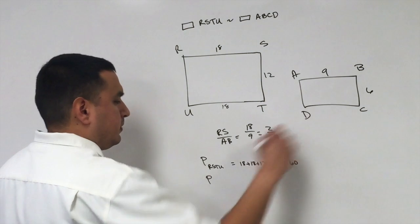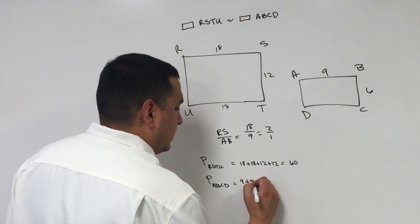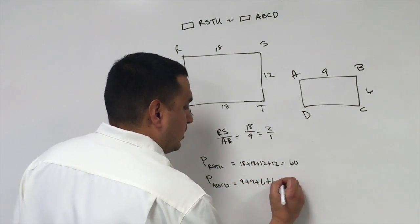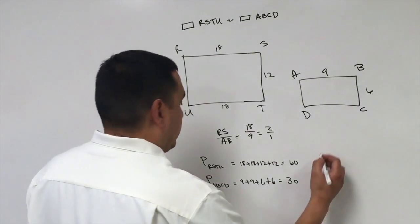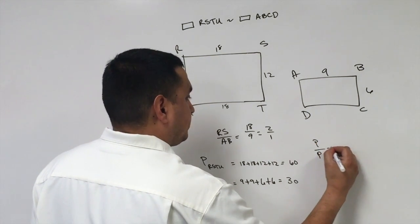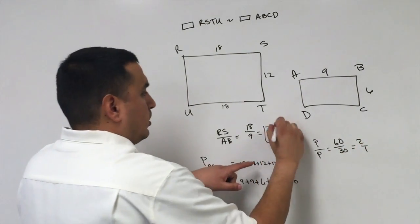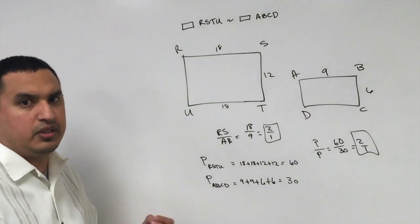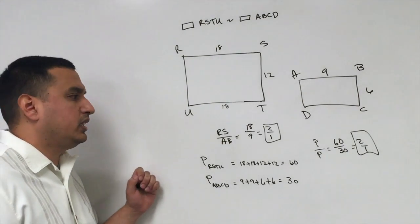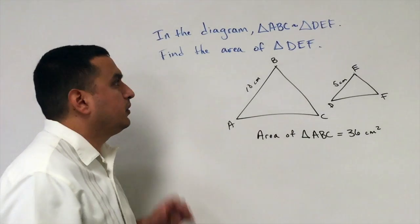The perimeter of rectangle ABCD is 9 plus 9 plus 6 plus 6, which equals 30. The ratio of the perimeters is 60 over 30, which is also 2 to 1. These are equal. The key thing to remember: the ratio of perimeters of similar polygons equals the ratio of corresponding sides.